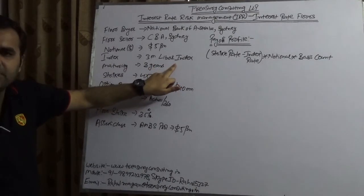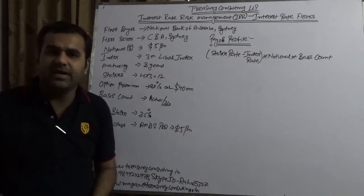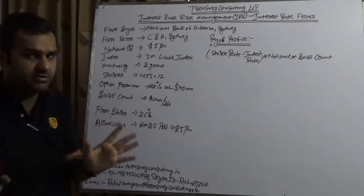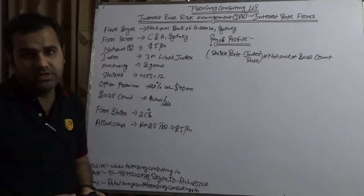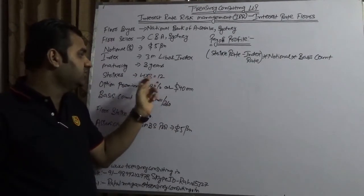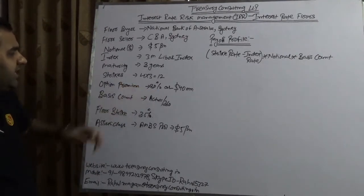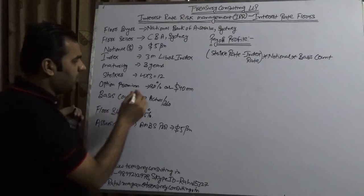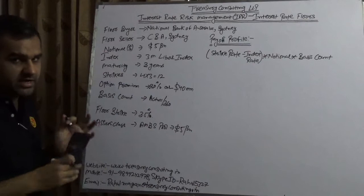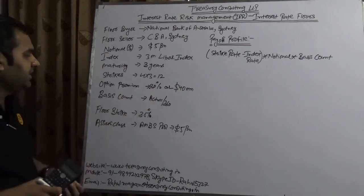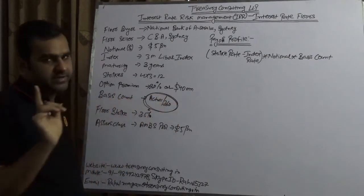The index, as usual, is the 3-month LIBOR — we don't want to complicate it with ICAP adjustments. Maturity is 3 years, total strikes is 12 (that is 4 quarters times 3 years). Option premium is 0.8%, which stands at $40 million. Basis count convention is actual over 360, because we are talking about the US market.